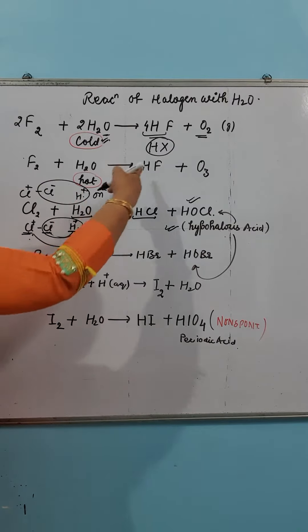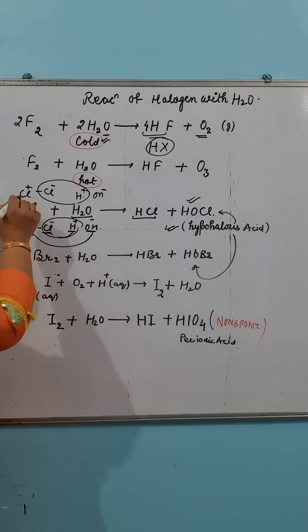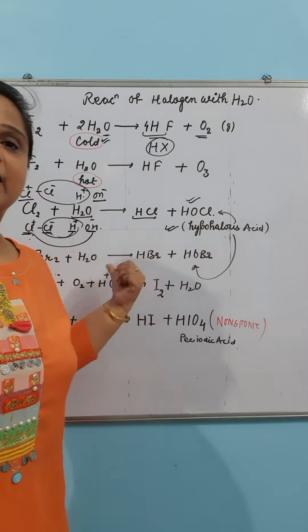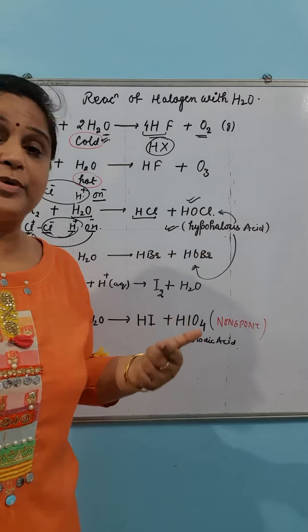HCl will be made as the halogen acid. And here you will get hypochlorous acid, HOCl. Same way, if you do with bromine, you will get HBr and hypobromous acid.